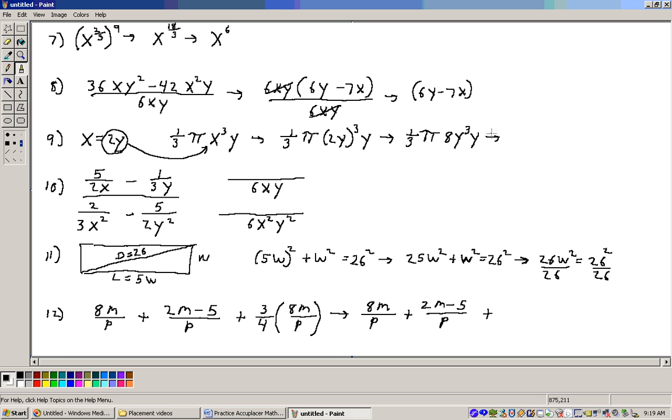Simplifying this, we'd have, well, I can pull this 8 out in front with that 1/3 giving me 8/3. I have a π, and a y to the 3rd times another y would be y to the 4th. That would be the answer to that problem.